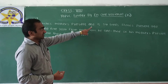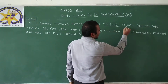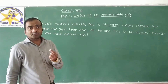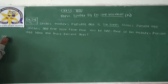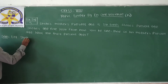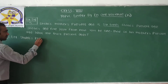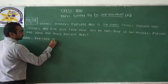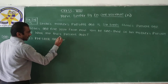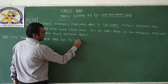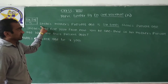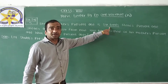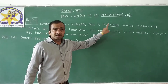Question number 5: Shavod's mother's present age is 6 times Shavod's present age. First of all, we consider Shavod's present age. Let Shavod's present age be x years. So his mother's age will be 6 times x, therefore his mother's age will be 6x years.